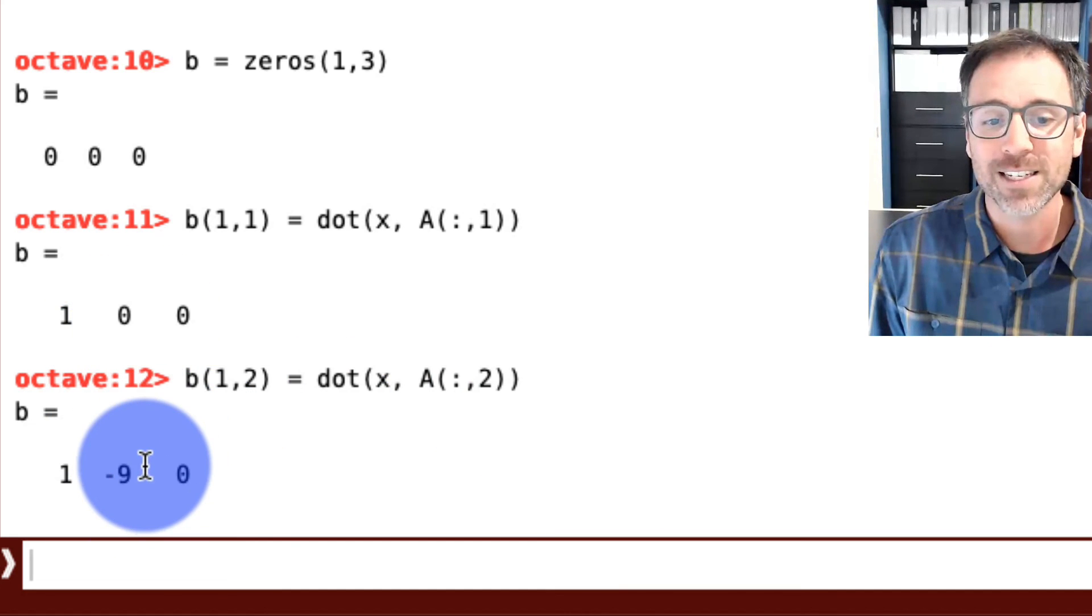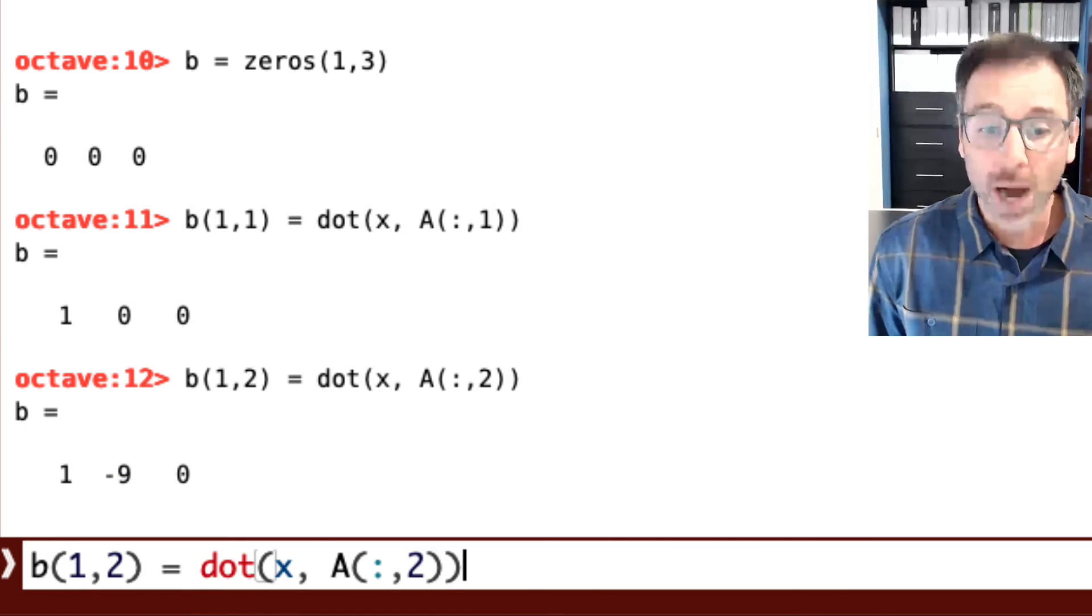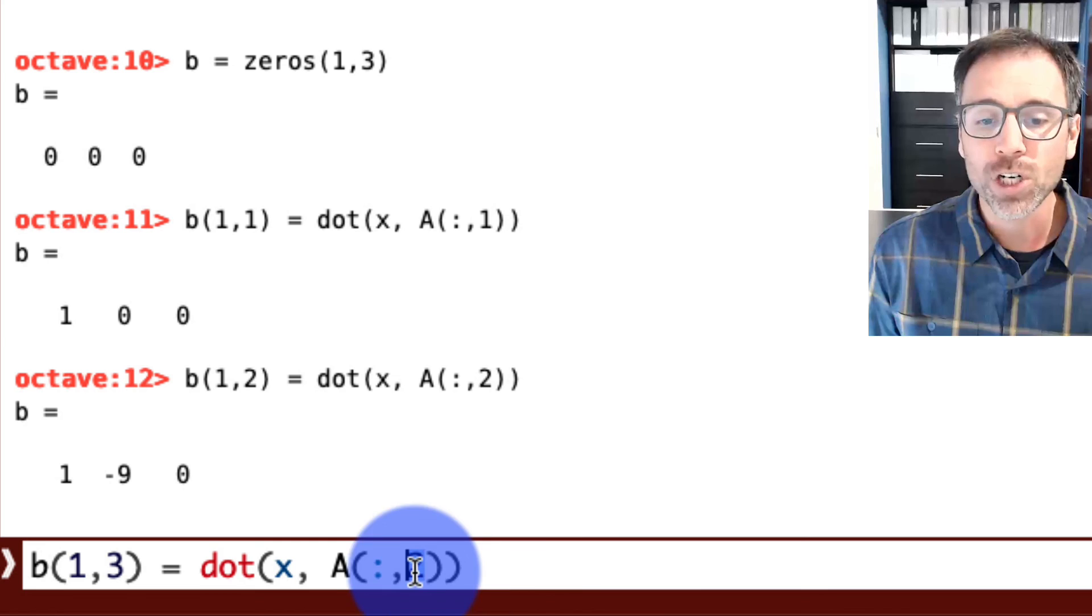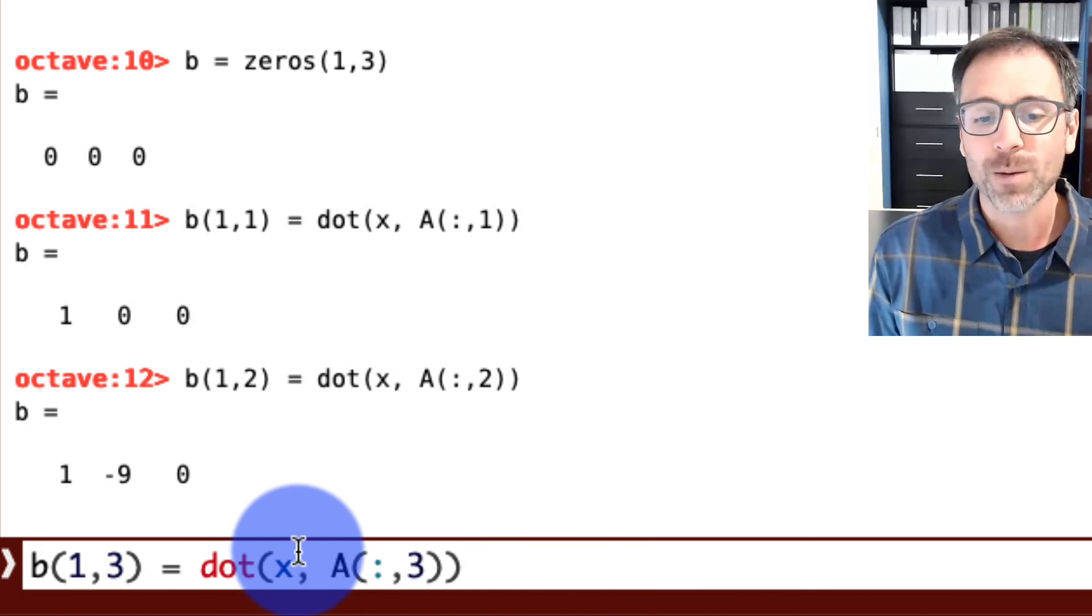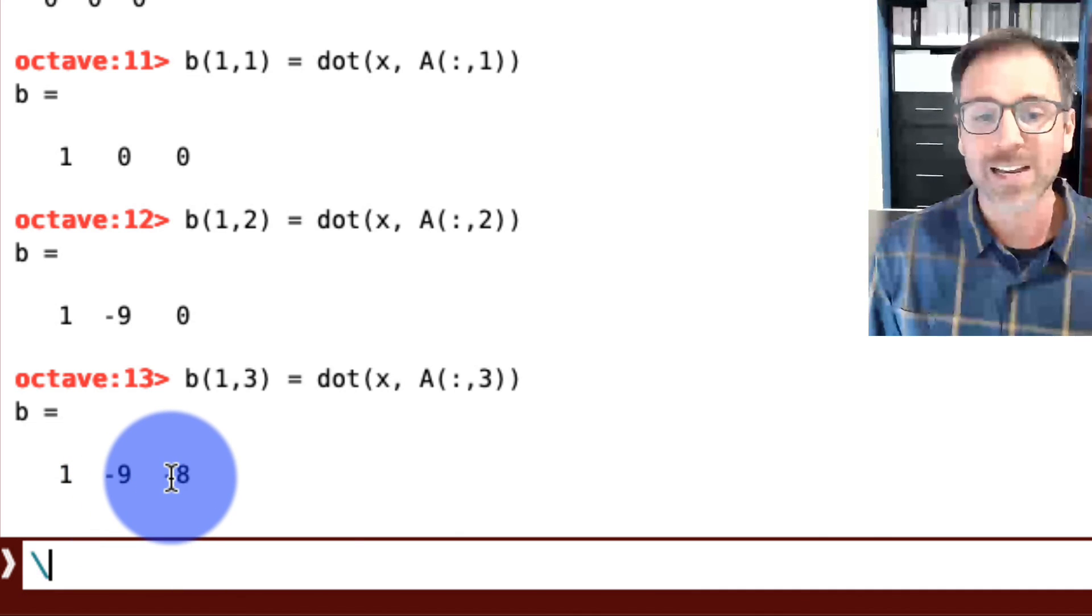Let's go up one more time. I push the up arrow on my keyboard. And we'll go over to the third column, which is going to be a dot product between the vector x and the third column of A. And that gives me 1, negative 9, negative 8.